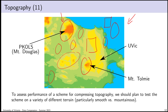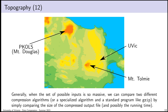For the sake of this lecture I'm going to simplify that a bit — I'll provide data from several different datasets I've produced, but they're all in BC. If I were designing a compression scheme for all topography in Canada, I'd want a lot more test data, but there's a limit to how much people will put up with in a lecture. Because the set of possible inputs is so massive, I believe we can compare two different compression attempts simply by comparing the size of the compressed output file.